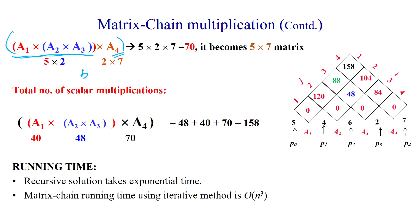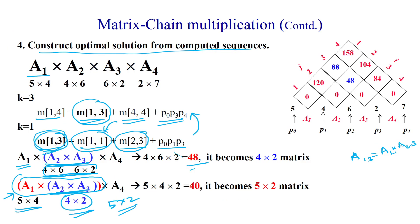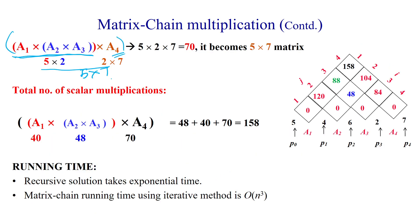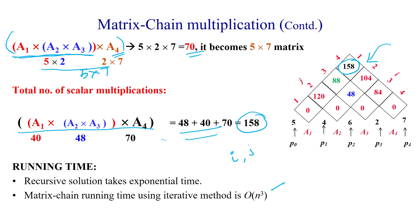The scalar multiplications are: 48 for (A2·A3), 40 for A1·(A2·A3), and 70 for the final multiplication, totaling 158. This matches the algorithm output of 158, confirming we got the optimal scalar multiplications. The running time is O(n³) because we use three nested for loops — for rows, columns, and the k values (feasible solutions at each step).